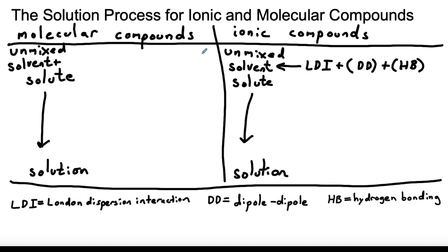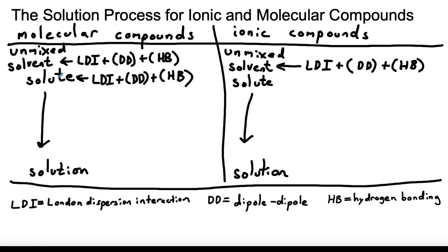We could repeat this for dissolving molecular compounds. So when we dissolve a molecular compound, the solvent again will have, before we dissolve — when we have the pure solvent — London dispersion, dipole-dipole if it's polar, and hydrogen bonding if it has hydrogen bond donors and acceptors. What about the solutes? For dissolving molecular compounds, the molecular compound is going to have the same situation as the solvent. The things that hold one solute molecule to another will be London dispersion, dipole-dipole if it's a polar compound, and hydrogen bonds between two solute molecules if it has hydrogen bond acceptors and donors.